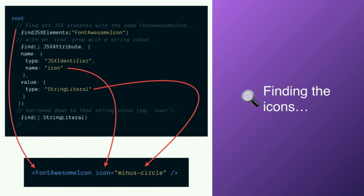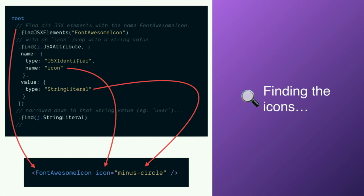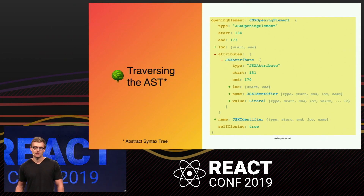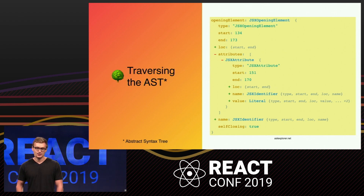This is a snippet of that transform — we're using the API provided by JSCodeShift to take in the file and convert it to an abstract syntax tree, or AST. This is a tree representation of the source code with the different pieces represented as nodes. Using those JSCodeShift helpers we can find all of the Font Awesome icon components and focus specifically on icons that are a string literal. This is a screenshot from astexplorer.net, an invaluable tool to paste in code and quickly see what the corresponding AST would be.